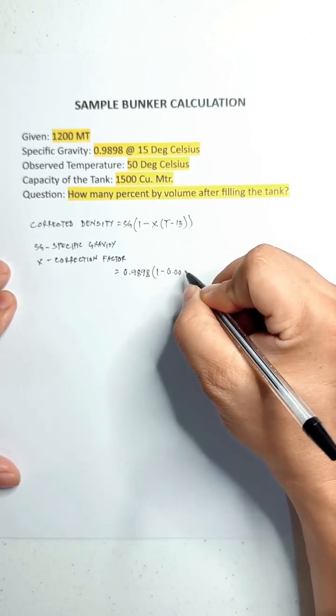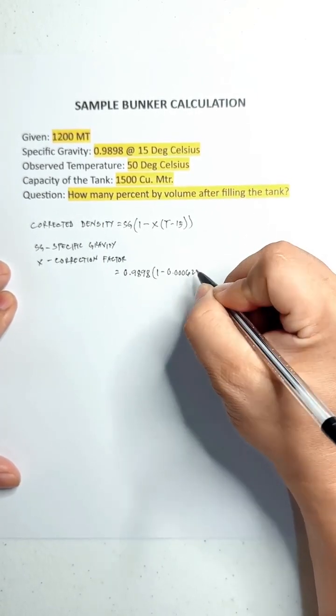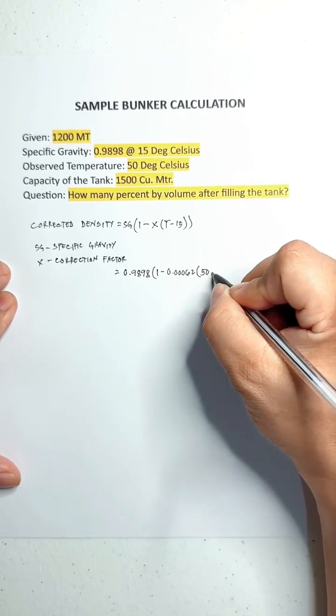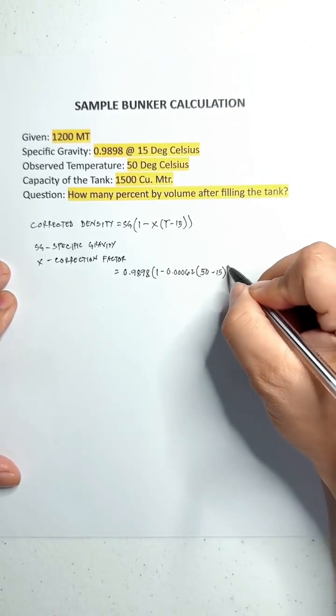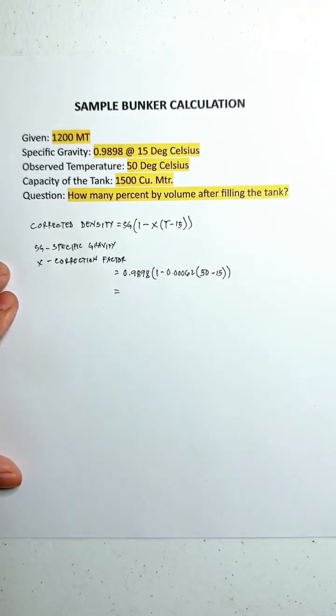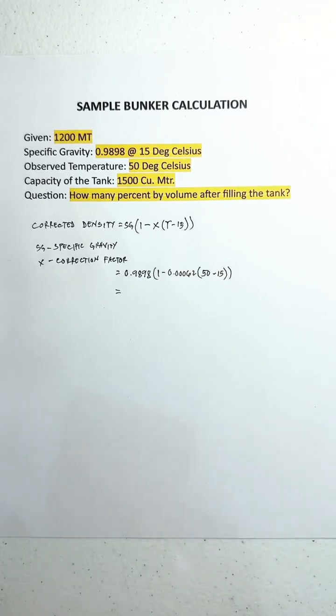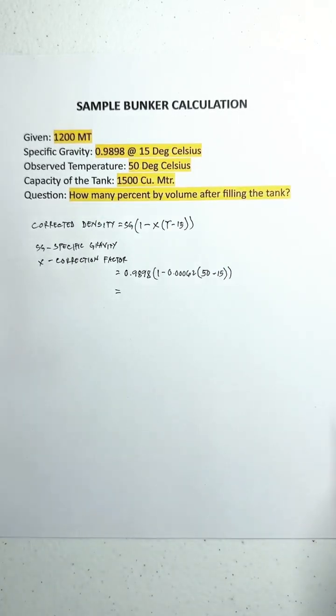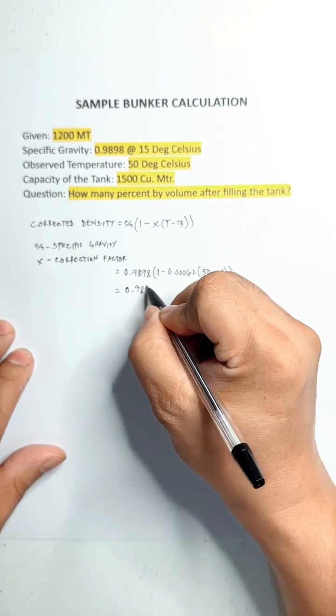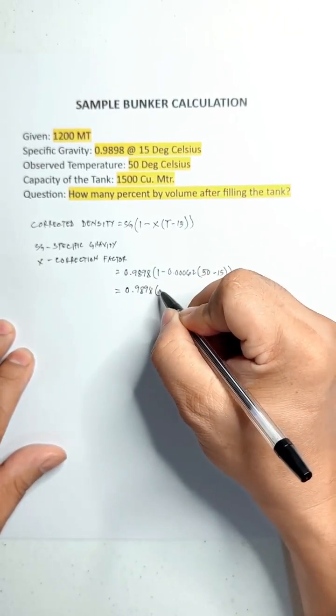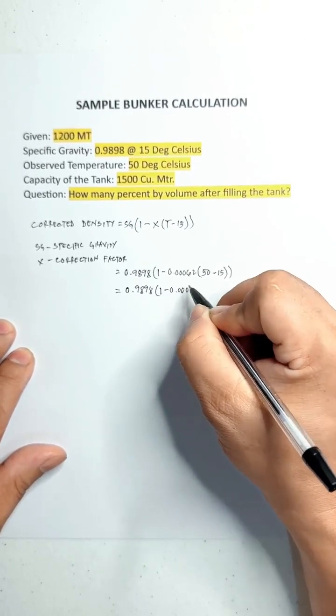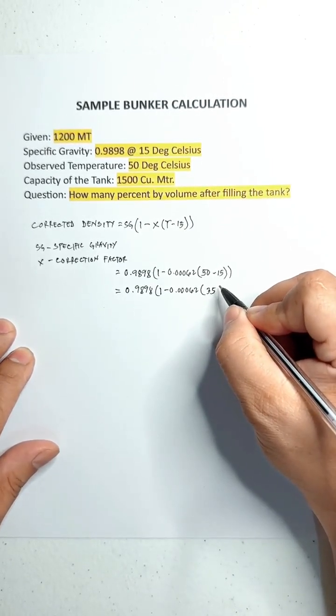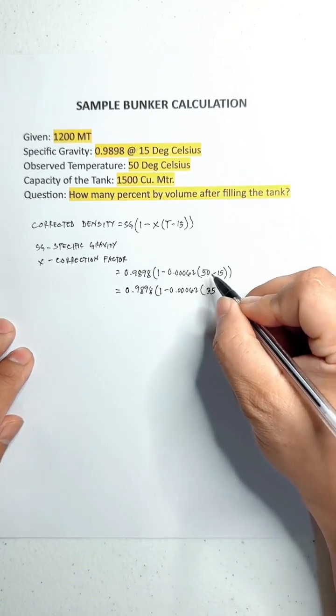Times 50 minus 15, which equals 35 degrees Celsius. So, 0.9898 times 1 minus 0.00062 times 35. That is the difference from 50 degrees Celsius to 15 degrees Celsius.